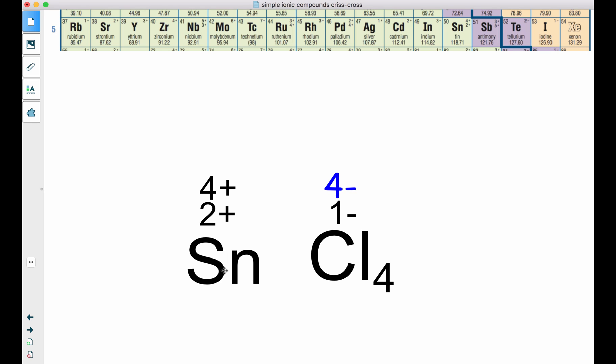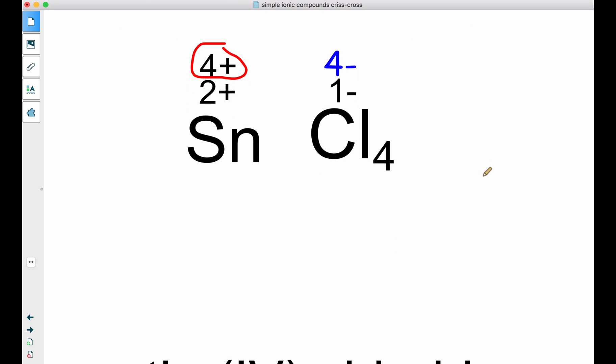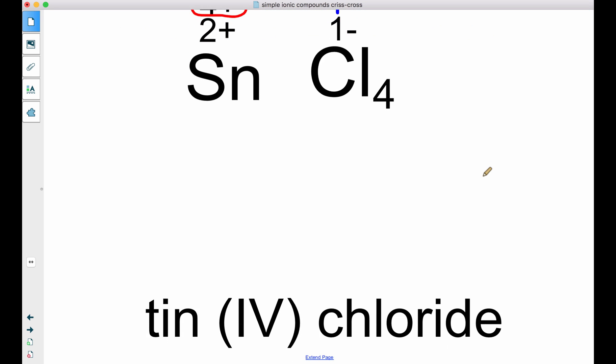Now, when my tin combines together with my chlorine, we have to have the charges be equal but opposite. So this is an overall charge of 4-. We have to use tin with a 4+ because it's like a math equation. 4+ put together with 4- goes to 0, which means the overall charge is neutral. So we have to use tin (IV) chloride.